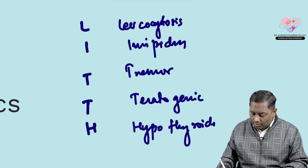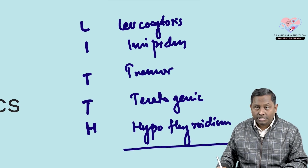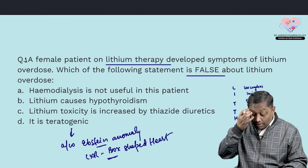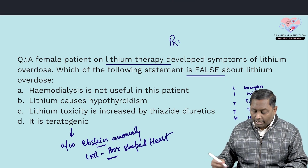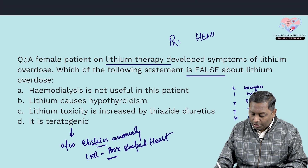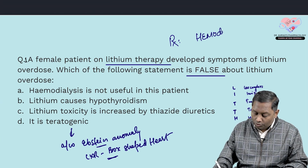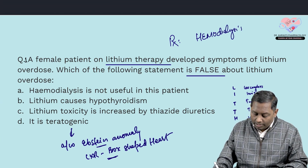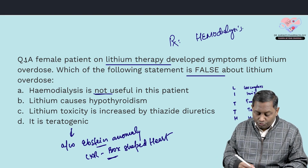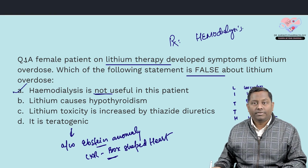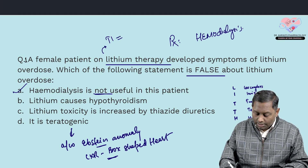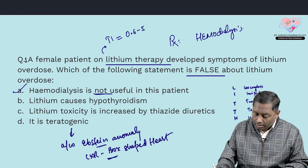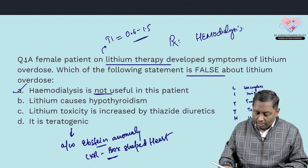So all the other options are correct. The only wrong statement is that hemodialysis is not useful — in fact, hemodialysis is required and is most useful in lithium overdose. Lithium is a drug with a narrow therapeutic index, with a therapeutic range of 0.6 to 1.5 milliequivalents per liter.